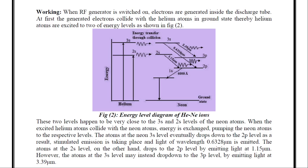The atoms at the neon 3s level eventually drops down to the 2p level. As a result, stimulated emission is taking place and light of wavelength 0.6328 micrometer is emitted. From this 3s state to 2p state, there is a stimulated emission process by which a light of wavelength 6328 angstrom is emitted.